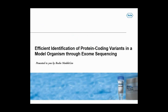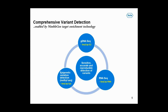Nimelgen has three categories of enrichment. CCAP-Easy, the technology that you'll hear about today, is focused on genomic DNA. Earlier this year, Nimelgen launched CCAP-EPI, an enrichment system focused on the detection of methylation patterns in genomic DNA. In October/November of this year, Nimelgen will launch CCAP-RNA, an enrichment system focused on variation detection in coding and non-coding RNA.